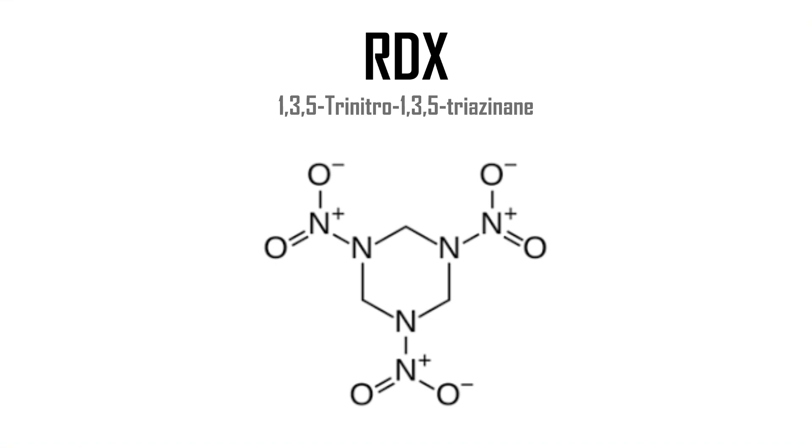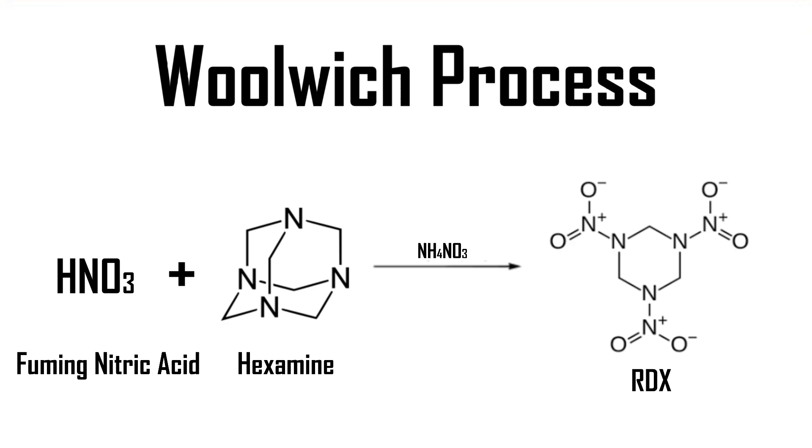There are quite a few ways of synthesizing it, but the most common ways are the Woolwich process, which we will be following today, and it's the most simple. It is done by reacting fuming nitric acid with hexamine in presence of ammonium nitrate.